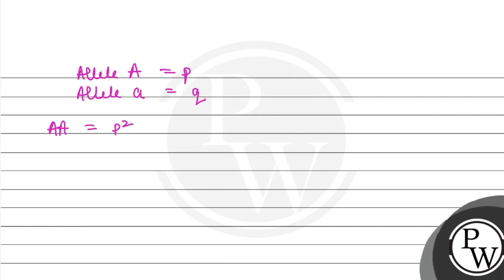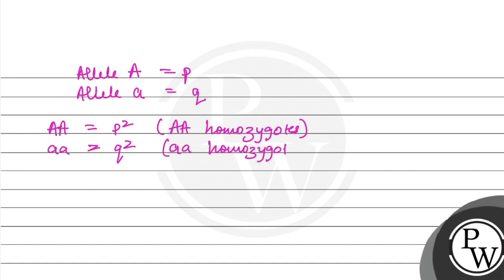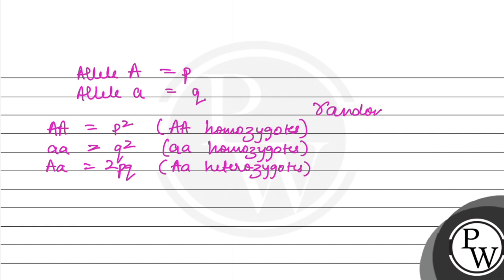Under random mating, the frequency for capital A capital A homozygote will be p², for small a small a homozygote it will be q², and for capital A small a heterozygote it will be 2pq. Therefore, in the absence of selection, mutation, genetic drift, or any other forces, p and q will remain constant.